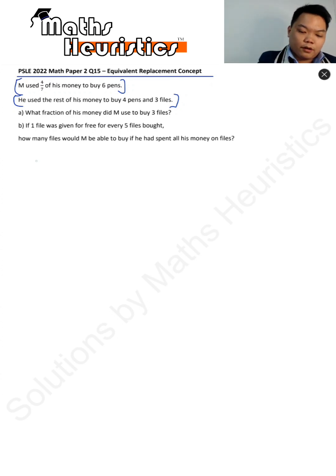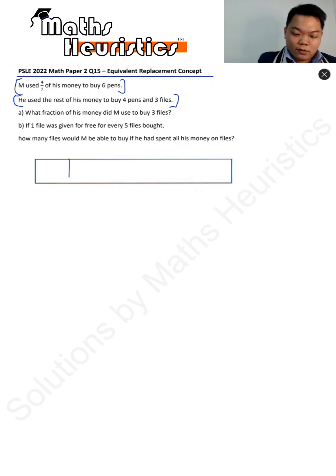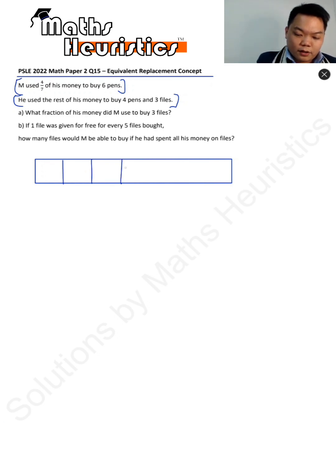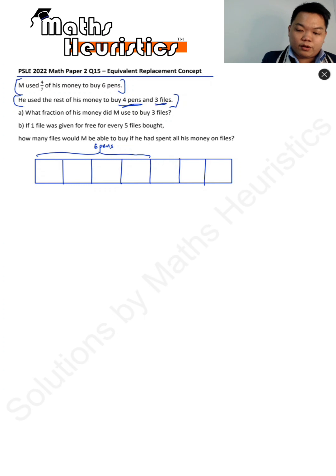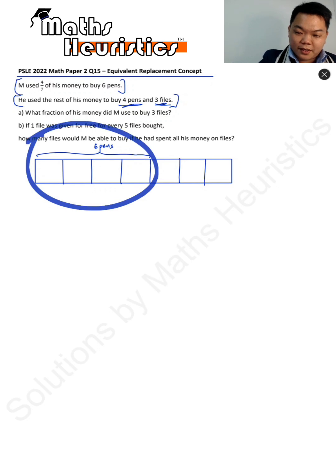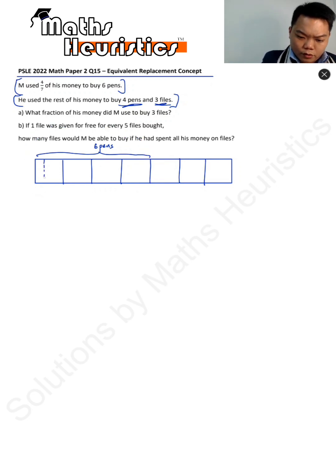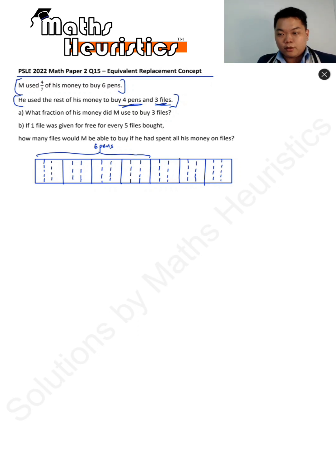This is how it's going to go. If he used 4/7 of his money to buy 6 pens, we can draw one long bar to represent his total amount of money and split it into 7 equal portions. So if 4 out of 7 was used to buy 6 pens, and he went on to buy 4 pens and 3 fouls, we want to make this region divisible by both 6 and 4. So we split them up into 12 units.